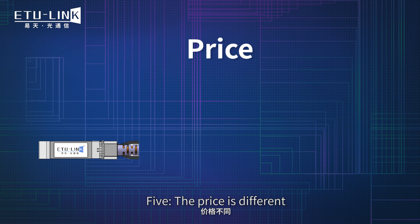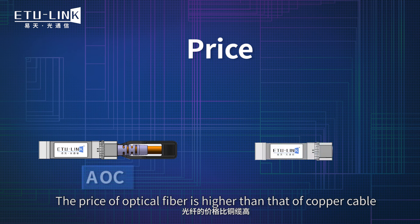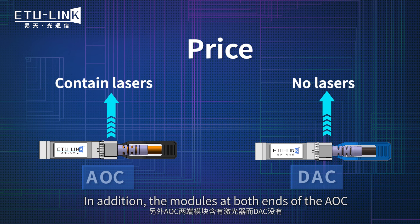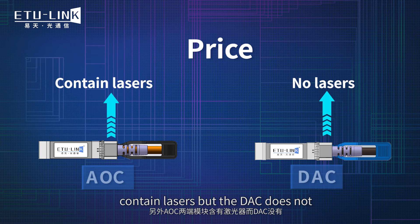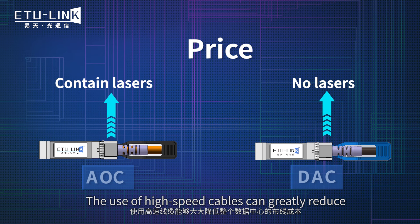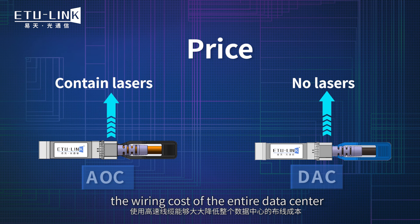Five: the price is different. The price of optical fiber is higher than that of copper cable. In addition, the modules at both ends of the AOC contain lasers, but the DAC does not. Therefore, the price of AOC is much higher than that of DAC. The use of high-speed cables can greatly reduce the overall cost of the data center.